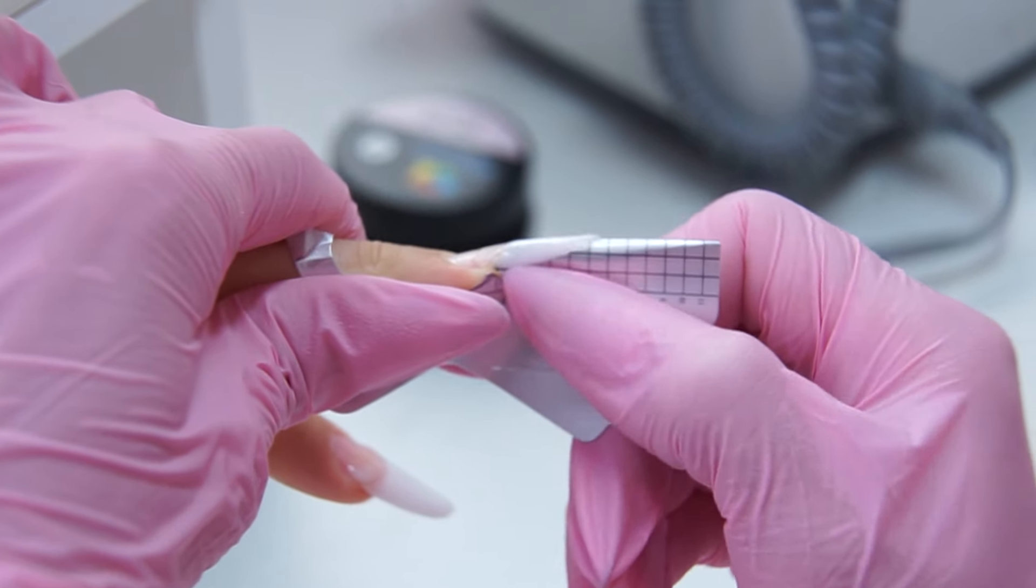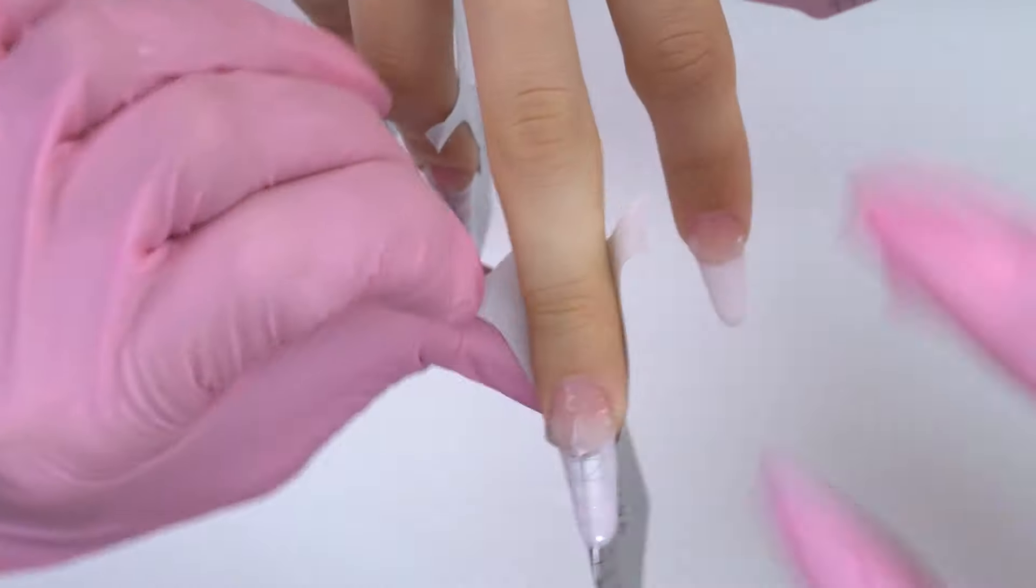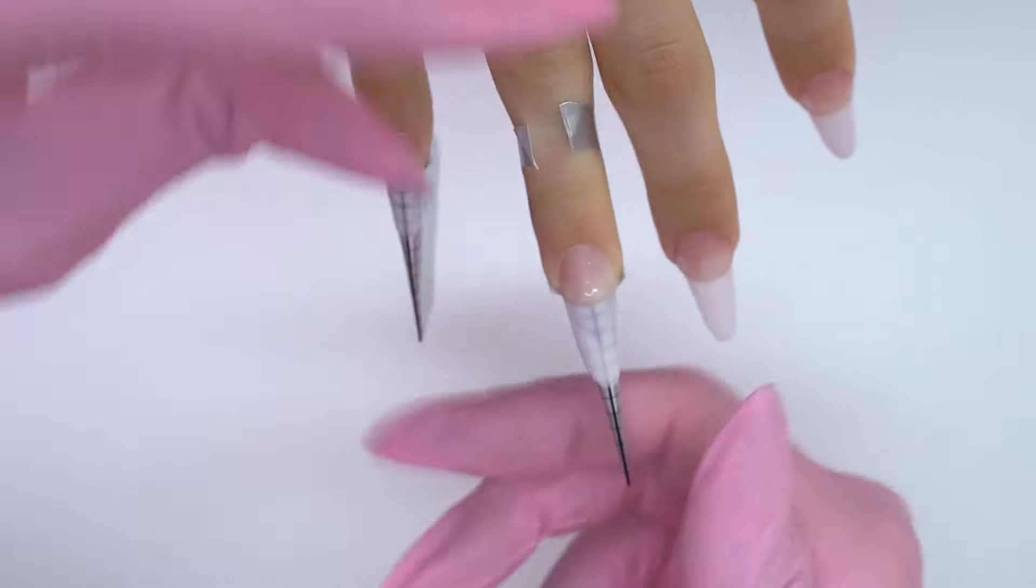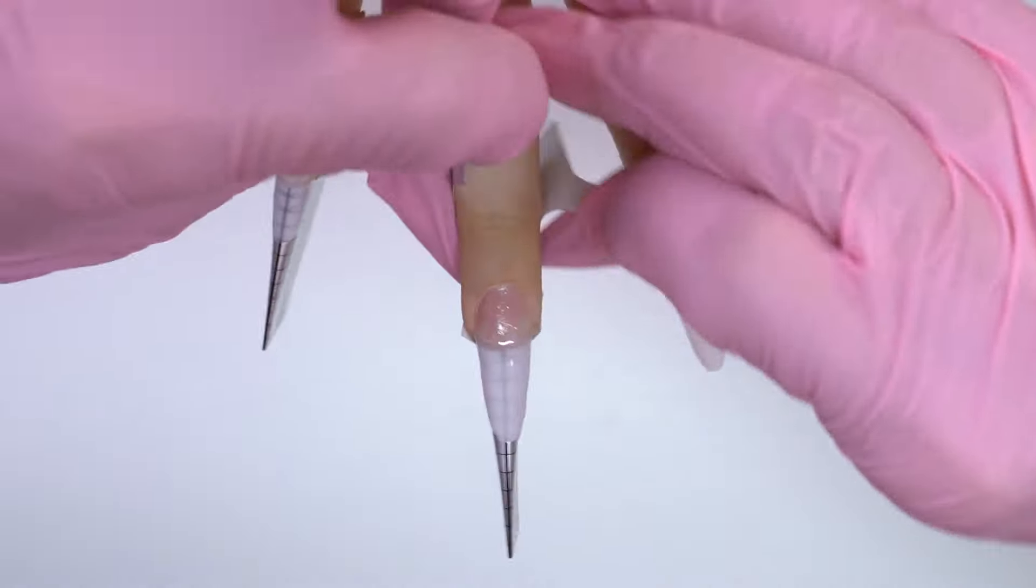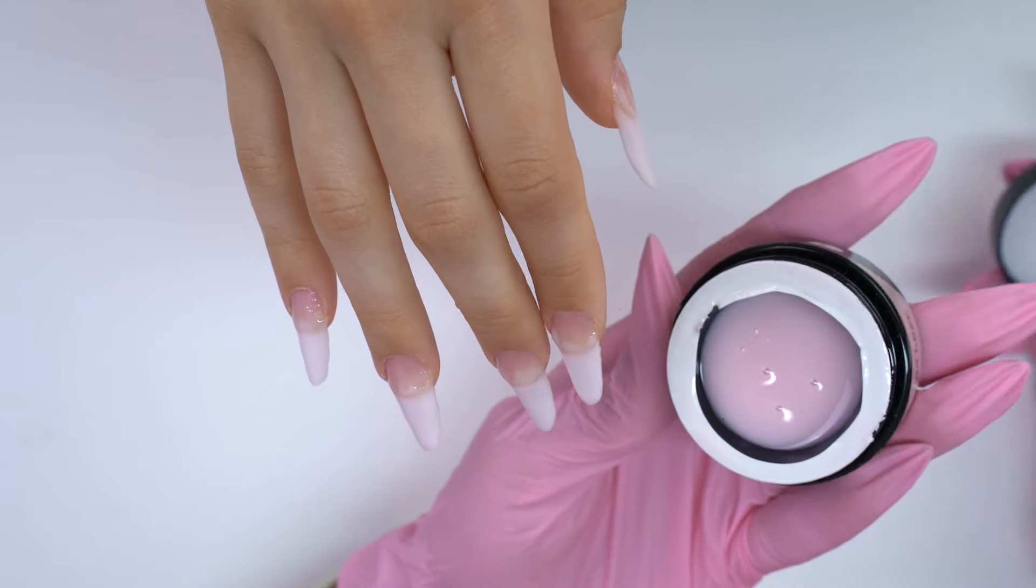Once it's cured, I can remove the form. These underlays are thick enough, so they won't break. We could also file the nails at this stage. And then work in a no-filing technique. But I decided to leave it for later.